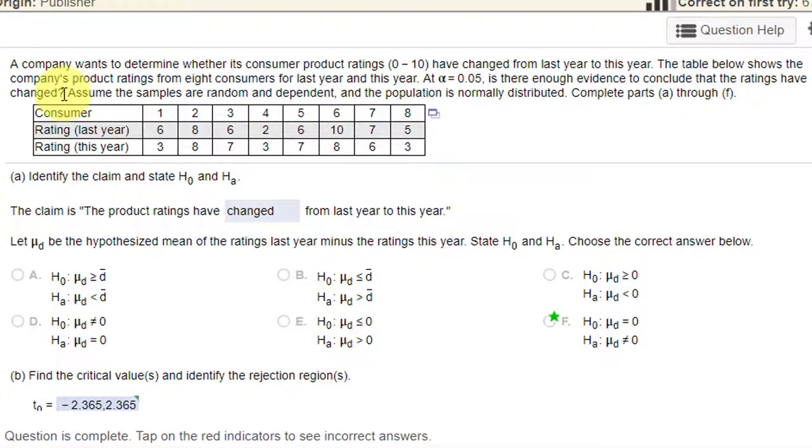The way we should interpret that is that the claim is that the ratings have changed, which is the first question here. That means this is a not equal for the mean difference μ₁ minus μ₂. And that means that our hypotheses would be set up this way. The null is the mean difference is 0. The alternative is the mean difference is not equal 0.